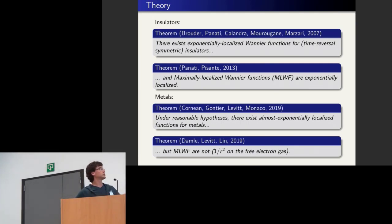What we've been working on is trying to extend that theory for metals. And what we found is that in theory, yes, you can get almost exponentially localized Wannier functions for metals in some sense, but actually the procedure to find them does not produce exponentially localized Wannier functions. So we can discuss about that if you're interested.